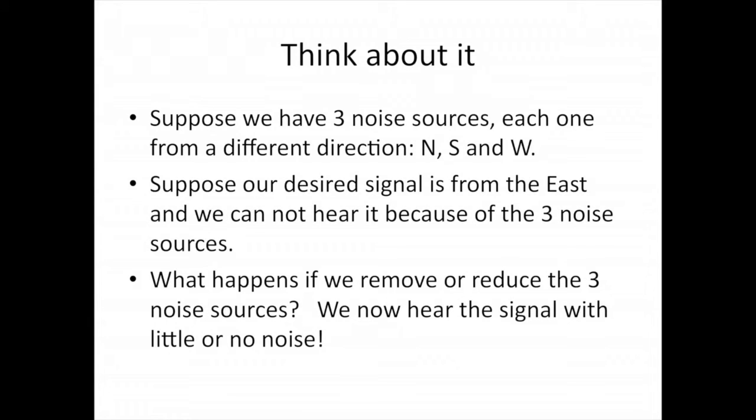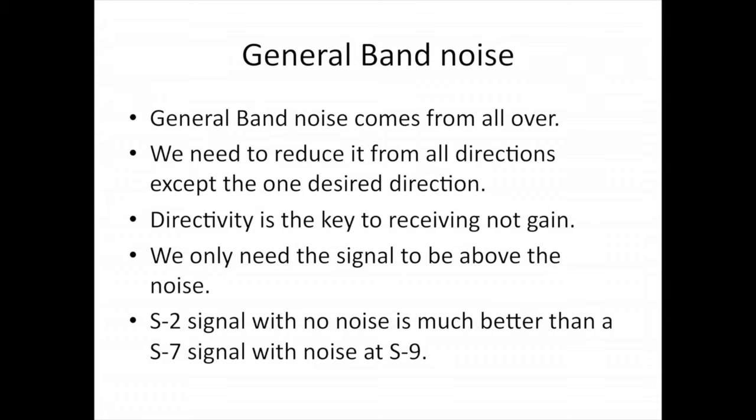Think about it. Suppose we have three noise sources, one each from a different direction. One from the north, one from the south, and one from the west. And our desired signal is from the east. We can't hear it because of the three noise sources. What happens if we remove or reduce the three noise sources? We now hear the signal with little or no noise. General band noise comes from all over, every direction. We need to reduce it from all directions except the one desired direction. Directivity is the key to receiving, not gain, particularly on 160 meters. We only need the signal to be above the noise. An S2 signal with no noise is a much better copy than an S7 signal with noise at S9.